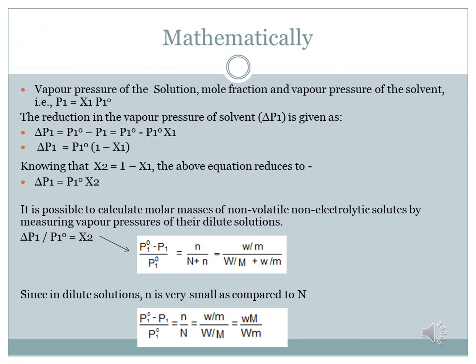To understand this topic mathematically, let us establish a relationship between the vapor pressure of the solution, the mole fraction, and the vapor pressure of the solvent. Here the vapor pressure of the solution is given by p₁, the mole fraction is given by x₁, and the vapor pressure of the pure solvent is given by p⁰₁. So p₁ = x₁ · p⁰₁. When we mix non-volatile solute with the volatile solvent, the vapor pressure decreases, and that change is represented by Δp₁.